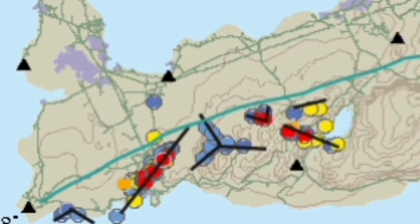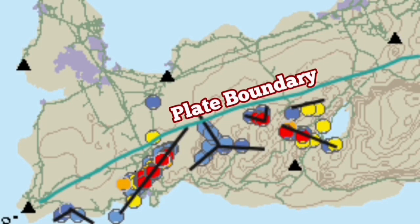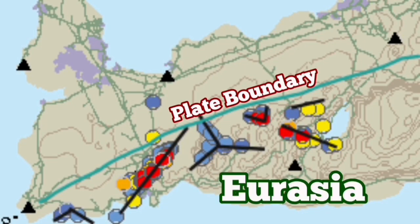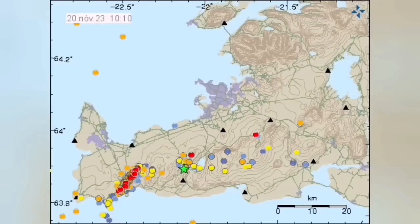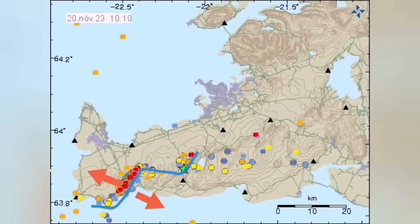These are all inside the Eurasian plate, where we have the pull of the plate subduction on the Pacific and the Amur plate, pulling down this direction. We can interpret it in a different way, more convenient way.